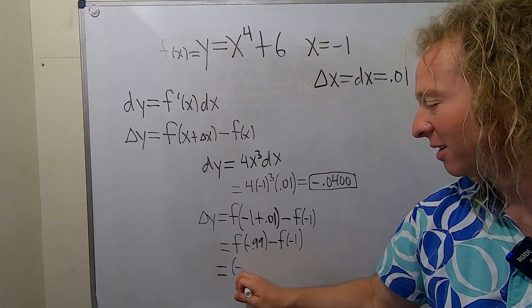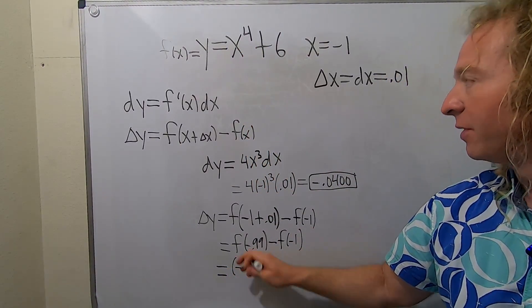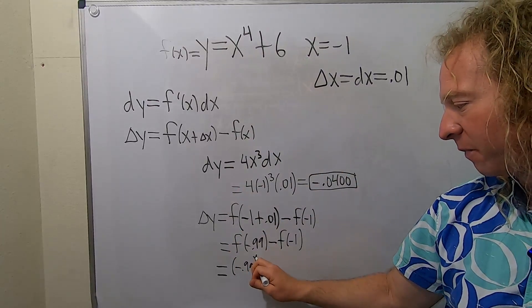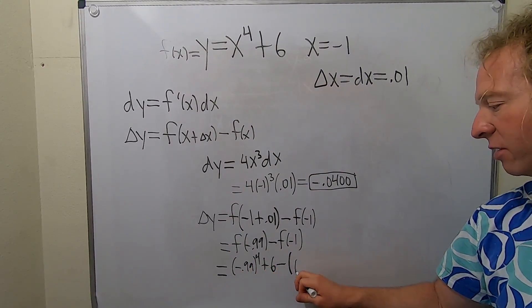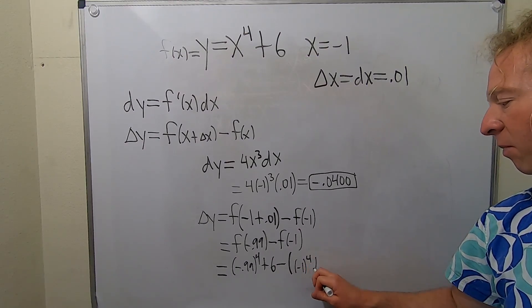We substitute into our function: negative 0.99 to the fourth plus 6 minus parentheses negative 1 to the fourth plus 6.